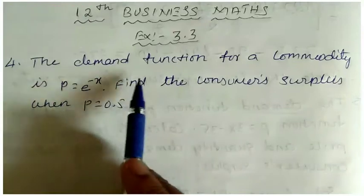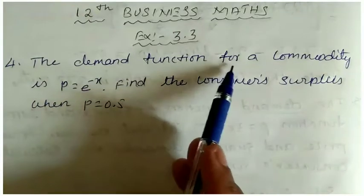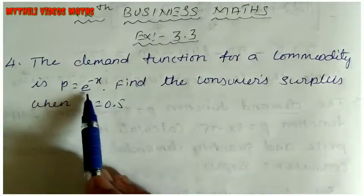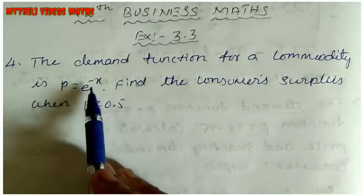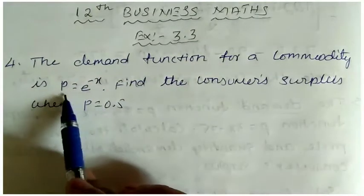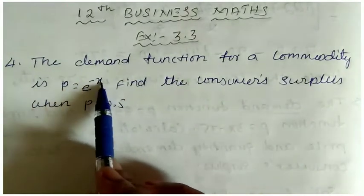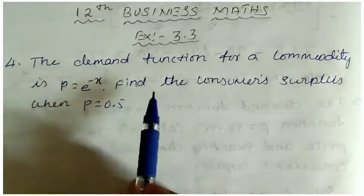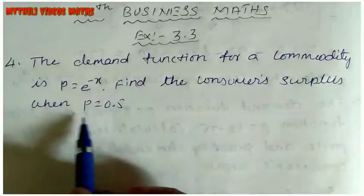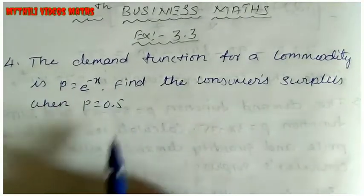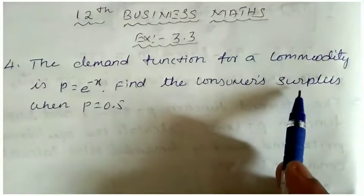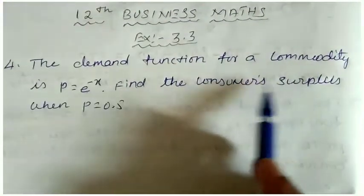The 4th sum: the demand function for a commodity is p = e^(-x). Find the consumer surplus when p = 0.5. Now we have to see the solution for consumer surplus.